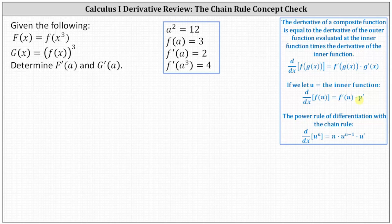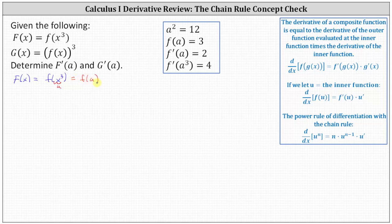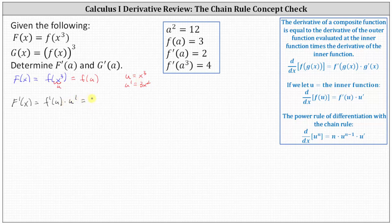Now let's consider F(x) = f(x³). Notice the inner function is x³ — let's identify that as u. So we can think of F(x) as f(u), where u = x³ and therefore u' = 3x². This indicates that F'(x) equals the derivative of f(u) with respect to x, which is f'(u) times u'. Writing this back in terms of x, we have f'(x³) times 3x².